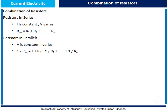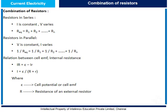Now let us understand the relationship between cell EMF and internal resistance. Here, IR equals epsilon minus Ir, or I equals epsilon by (R plus r), where epsilon stands for cell EMF, capital R stands for the resistance of an external resistor, and small r stands for internal resistance.